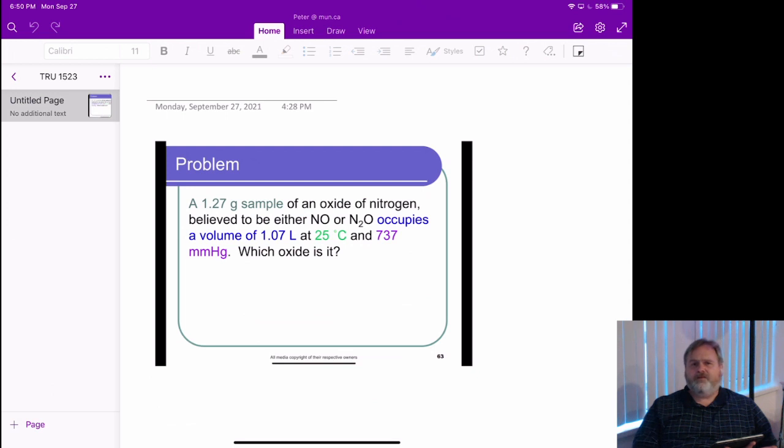We're not going to worry about what those are just yet. That gas occupies a volume of 1.07 liters at 25 degrees Celsius and 737 millimeters of mercury. So which oxide is that?